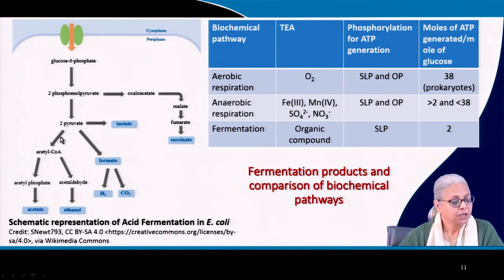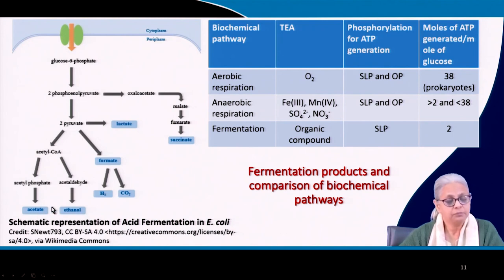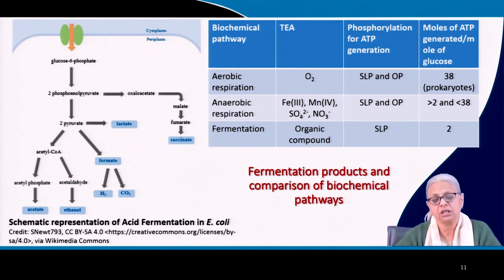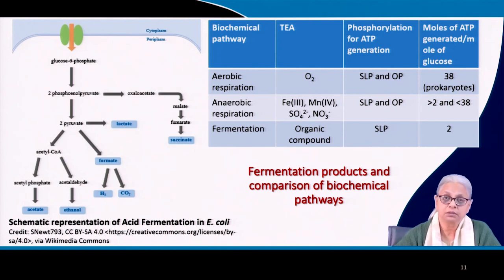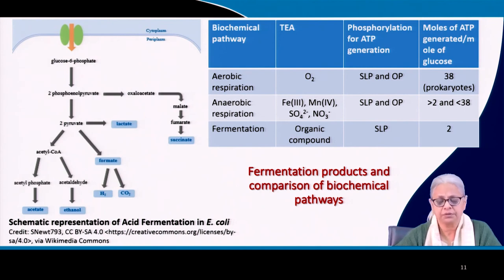Pyruvate can also be converted to acetyl-CoA, which can form acetyl phosphate, acetaldehyde, acetate, and ethanol. These are examples of fermentation end products from the same starting compound, depending on the organism performing fermentation. Every different organism generates different products depending on the starting compound and the nature of the organism.